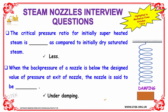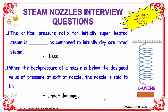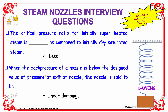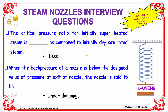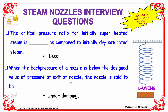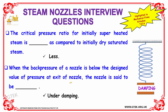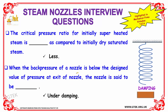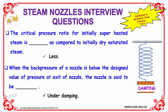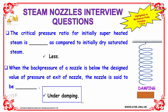The critical pressure ratio for initially superheated steam is less as compared to initially dry saturated steam. When the back pressure of a nozzle is below the defined value of pressure at the exit of the nozzle, the nozzle is said to be underdamping.